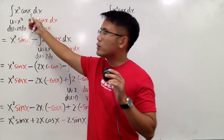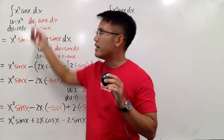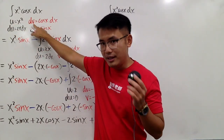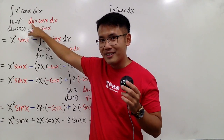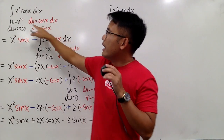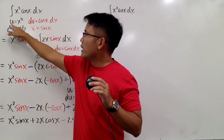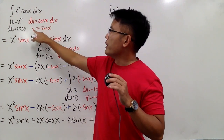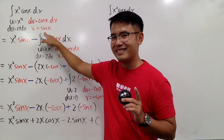We are going to integrate x² times cosine x dx. To do this, we use integration by parts, which means we break this down into two parts: one part to be differentiated — that's the U part — and the other part to be integrated — that's the dV part. You should always choose the harder part to integrate. So I'm going to pick cosine x dx to be integrated, and put down x² to be differentiated. Once we make our selection, we differentiate to get du = 2x dx.